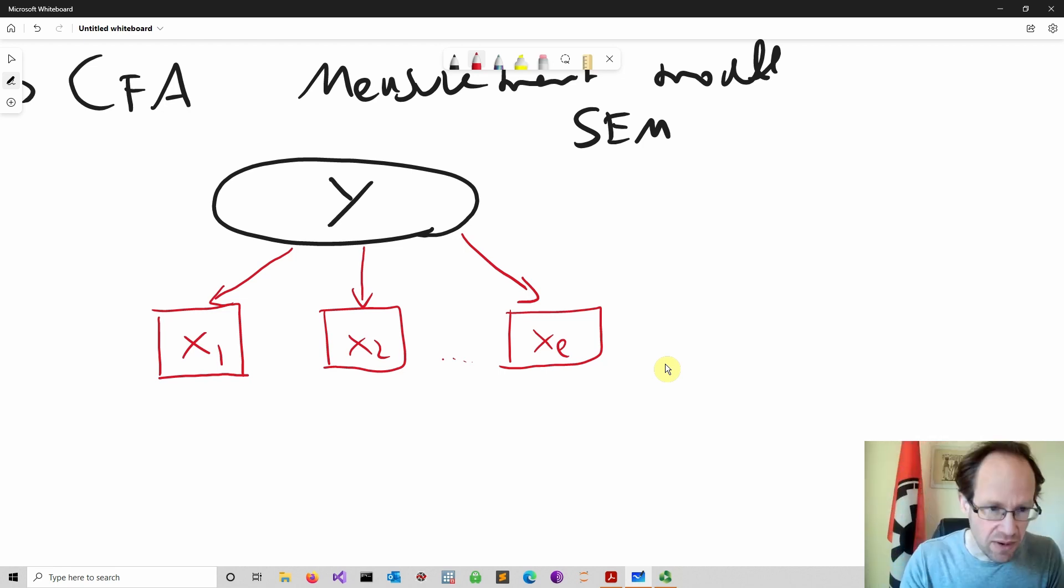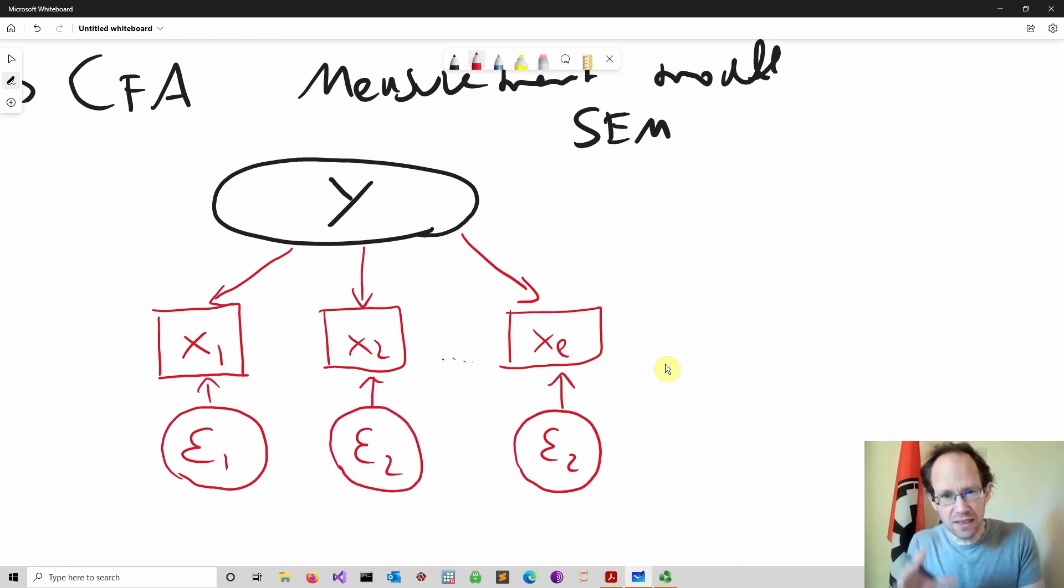Put differently, these latent variables they contribute to the outcome, to the answers you might give in a questionnaire. Then the other component is each and every factor has its own error term, so the so-called idiosyncratic error term which also affects your response. So you have a common latent variable Y which influences all these different factors, and then you have an idiosyncratic error component. What we try to quantify is here the so-called factor loadings. The other thing which you can permit in these measurement models is you can permit that these error terms are correlated.